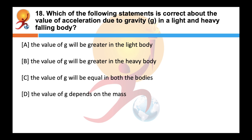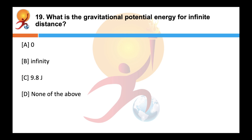Which of the following is correct about acceleration due to gravity in a light and heavy falling object? Correct answer is C. Acceleration due to gravity is independent of the mass, shape, and size of a falling body. Therefore, a light and a heavy body will have equal acceleration. What is the gravitational potential energy at infinite distance? Answer is A: it equals zero. Gravitational potential energy is given by U = −GMm/R, and as R approaches infinity, U becomes zero.